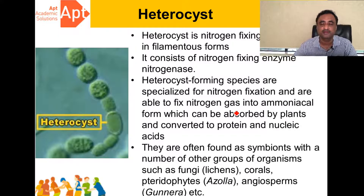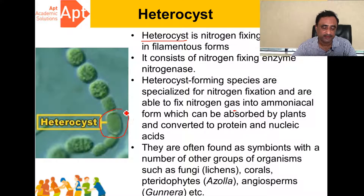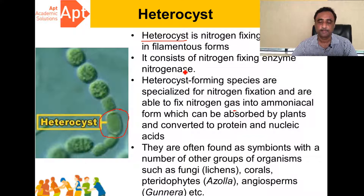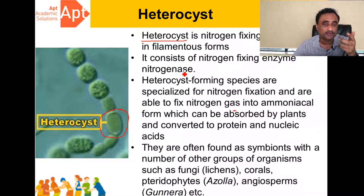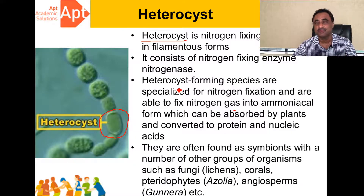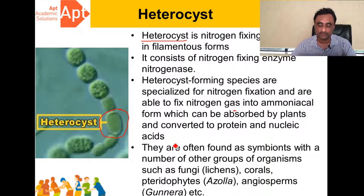Another very important cell found in Monera is the heterocyst. In the diagram you can see an enlarged cell — this is the heterocyst. It is a very special cell because it has the capacity to fix atmospheric nitrogen. It contains an enzyme called nitrogenase, which helps in the fixation of atmospheric nitrogen.